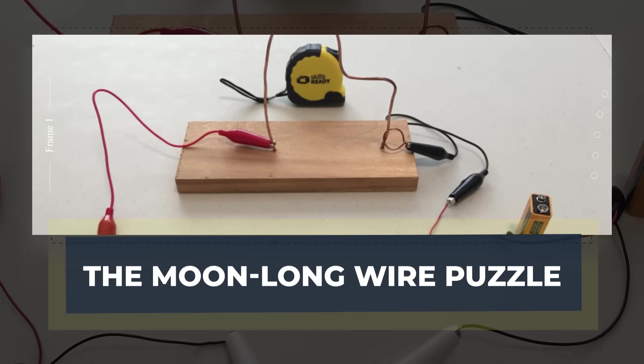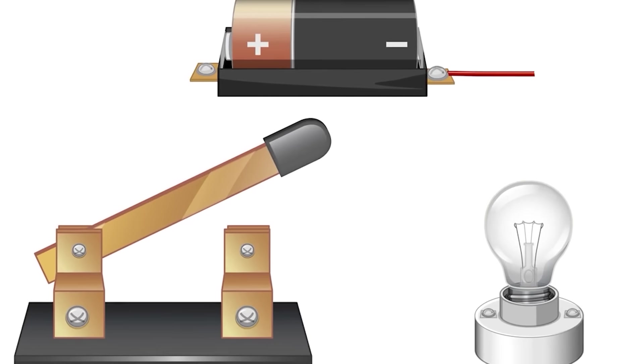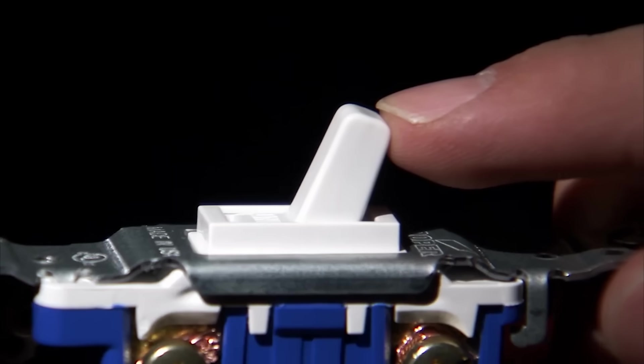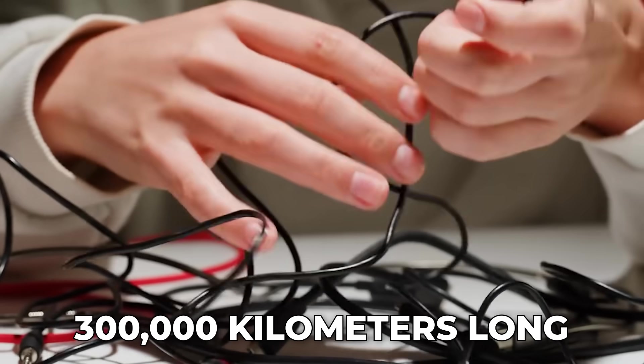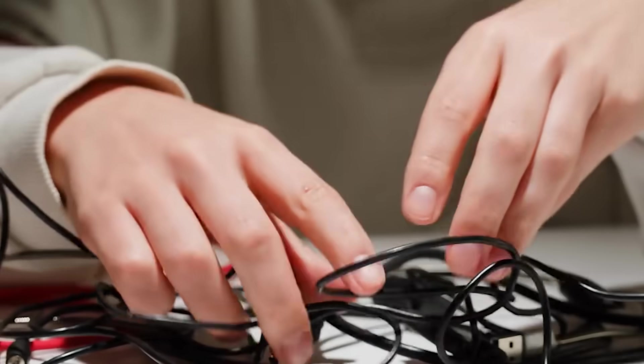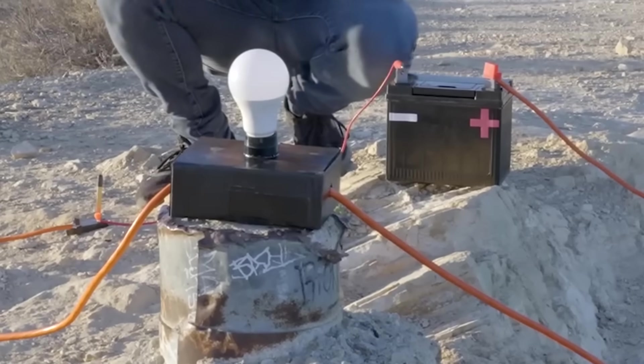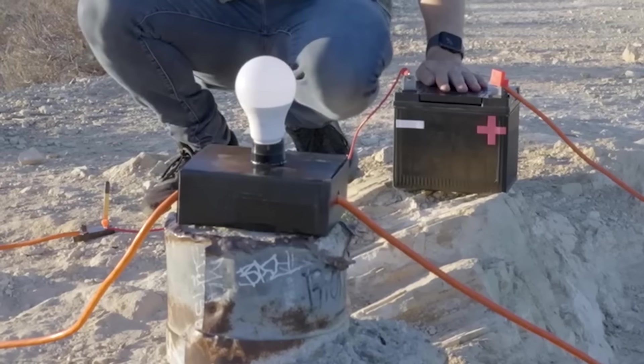The Moon Long Wire Puzzle. Picture a giant loop made of a battery, a switch, a bulb, and two absurdly long wires. Each wire is 300,000 kilometers long, so each one is one light second in length. They run away, reach far into space, and come back to meet a bulb sitting just one meter from the battery.